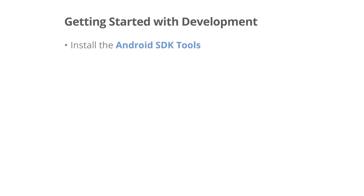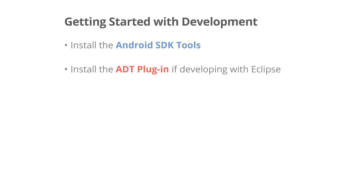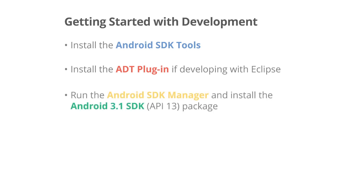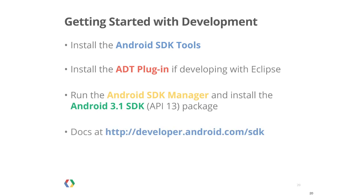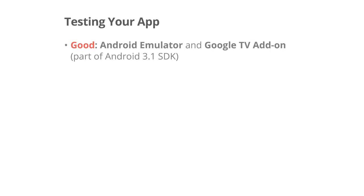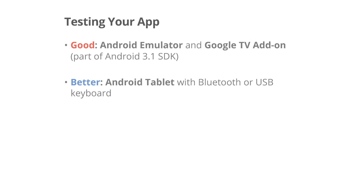To start developing apps for Google TV, you'll need to install the Android SDK tools. If you'll be using the Eclipse IDE, which is recommended, you'll need the ADT plugin for Eclipse. Once you have the SDK tools installed, you can run the Android SDK Manager and install the Android 3.1 SDK package for developing Google TV apps. Documentation can be found at developer.android.com/sdk. For testing, the Android SDK tools includes a hardware accelerated emulator you can use with the Google TV add-on that is part of the Android 3.1 SDK package. An Android tablet in landscape mode with a USB or Bluetooth keyboard attached will allow you to test layouts and D-pad navigation, but you should definitely consider getting a real Google TV device for development.